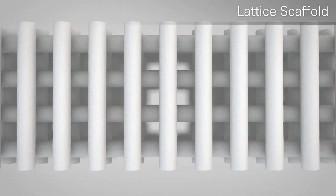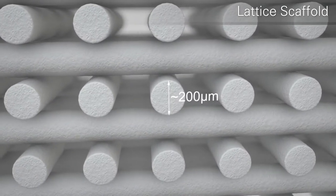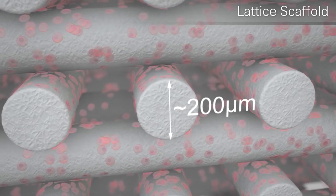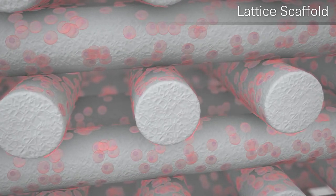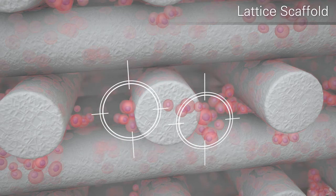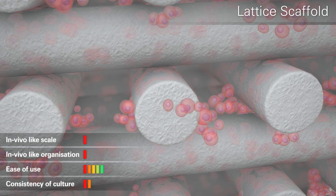Lattice scaffolds are comprised of a relatively large grid-like structure. The scale of the lattice results in cells either falling through the gaps in the structure or forming a two-dimensional monolayer of cells on the surface of the lattice members with only occasional pockets of 3D cell growth. Cell-to-cell interactions are therefore greatly reduced.